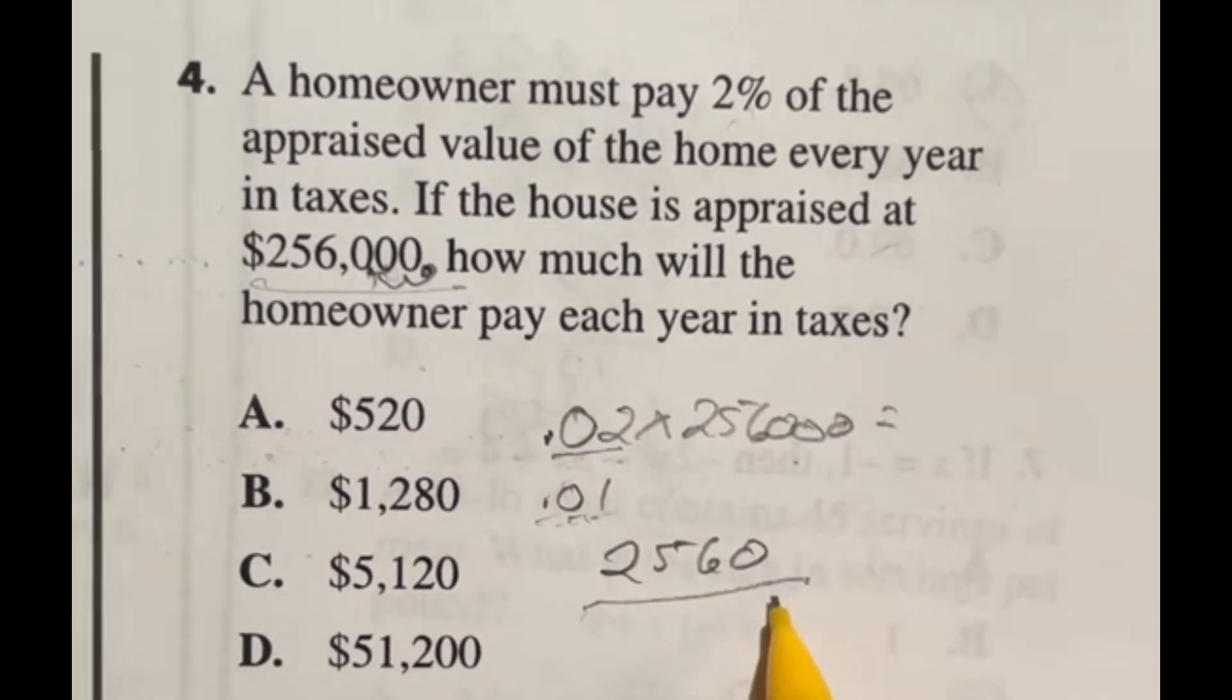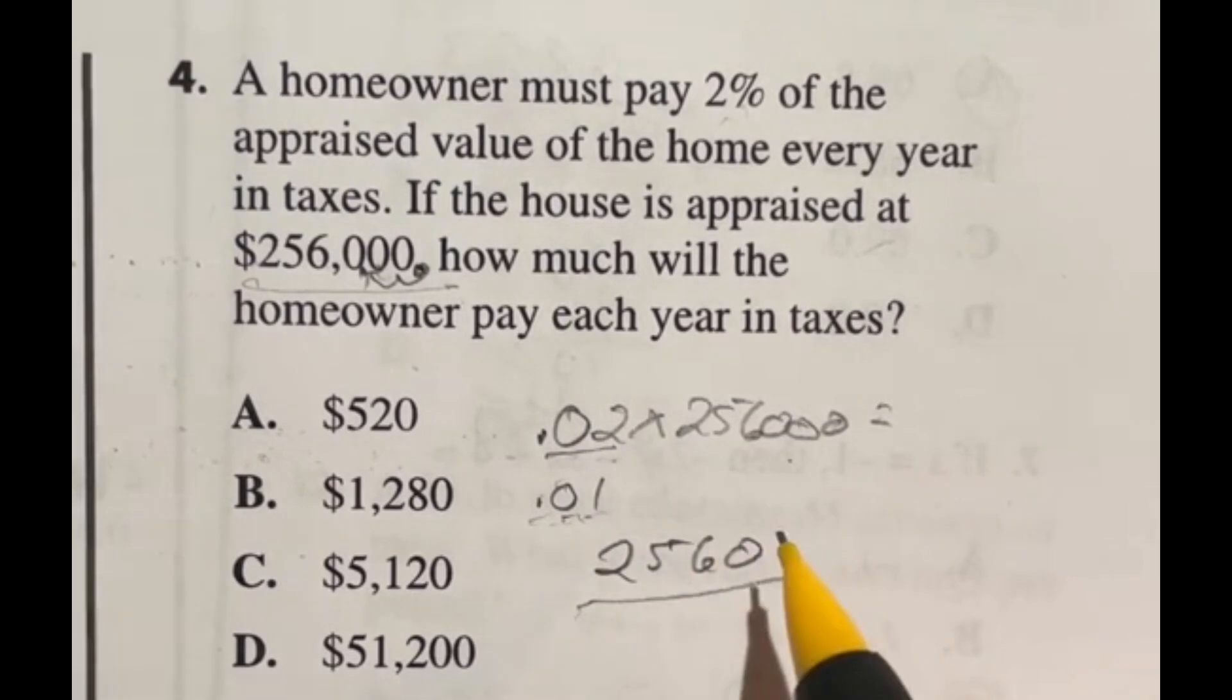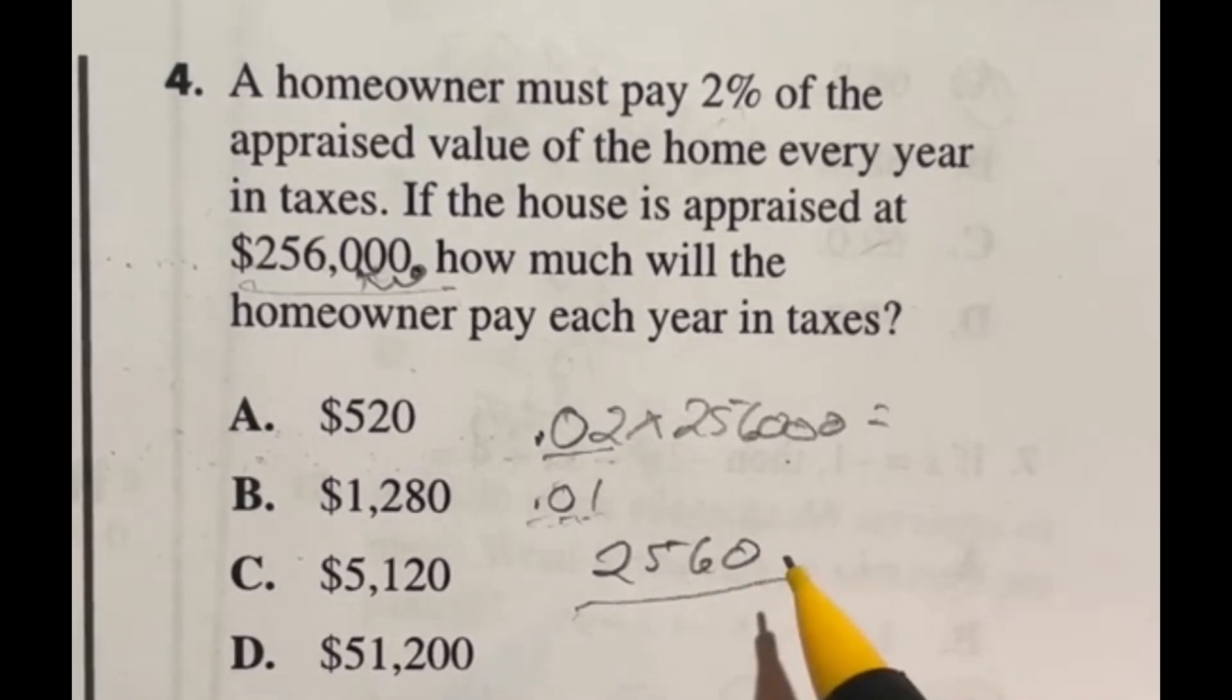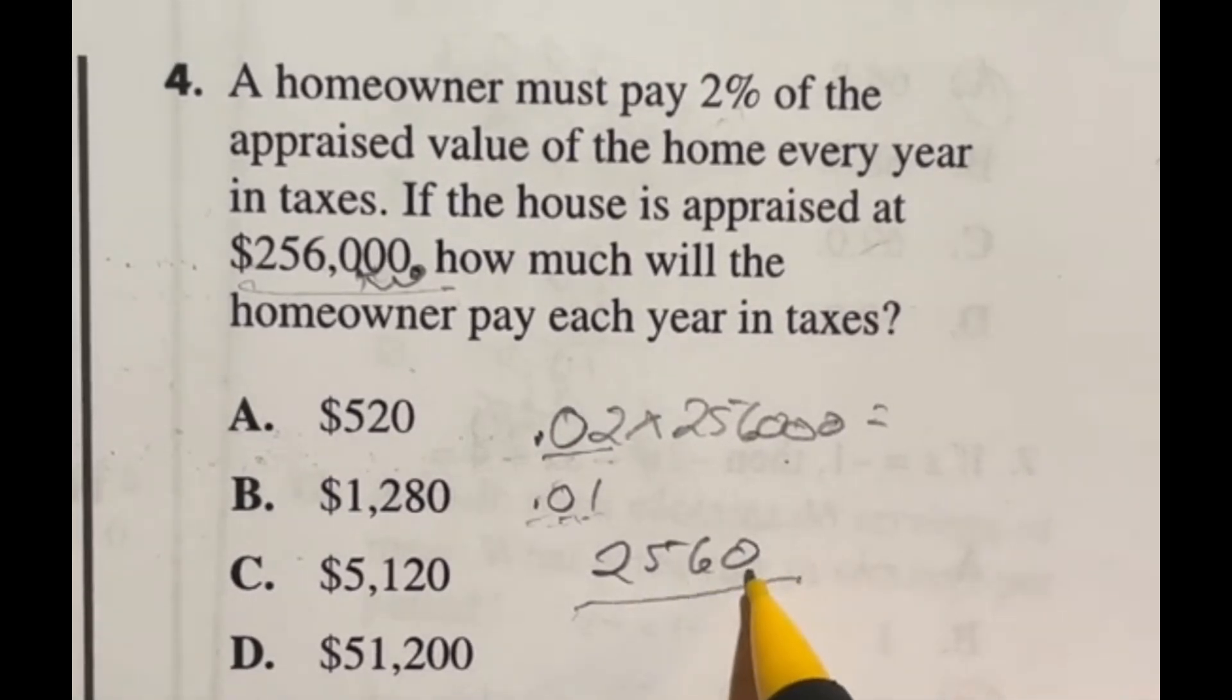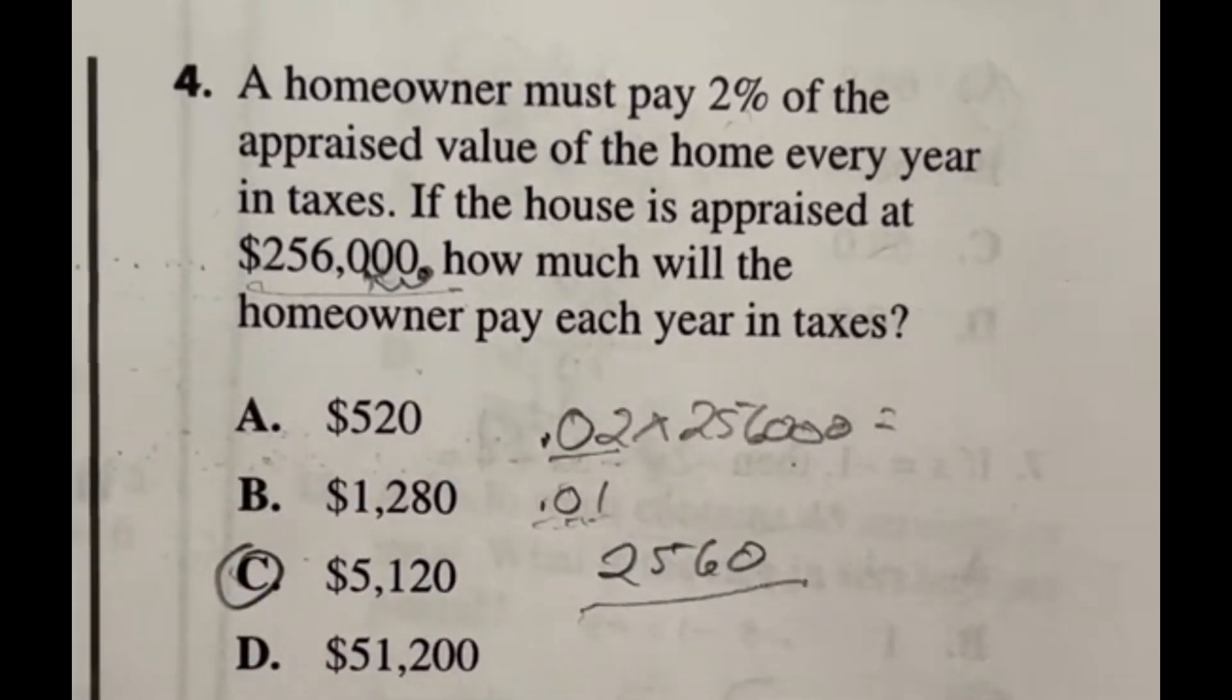Now that we have this, we just need to double it because that's 1%. We need 2%. So multiply it by 2. So if I'm doubling this, well, I can see right off 2,500 doubled would be 5,000. And then with another 60 would be another 120 doubled. So 5,120, which is answer C. So not too bad, just doing some little short tricks.